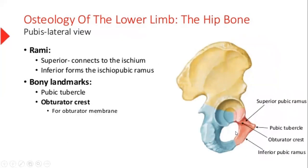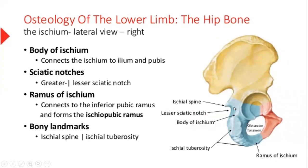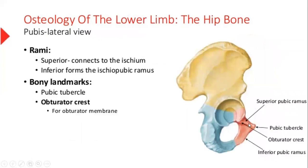If we talk about pubis, we have two rami: one is the superior pubic ramus, and then we have an inferior pubic ramus present here. We have a pubic tubercle. This is the ischial spine, this is the pubic tubercle, and the obturator crest, which is for the obturator membrane.